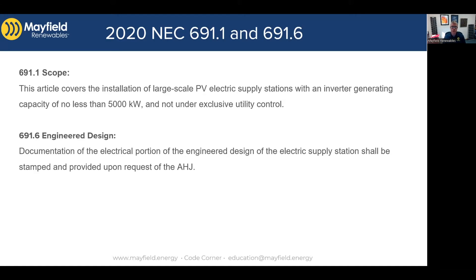The scope also addresses not being under the exclusive control of the utility. It's important to know what generating capacity is — it's actually the AC output of the inverters, the sum of the inverters' AC power output, the continuous power output at 40 degrees C. So for large scale systems, the 5000 kilowatt threshold is an AC value and it's a very specific value of the inverter output. That definition also shows up back in Article 690.